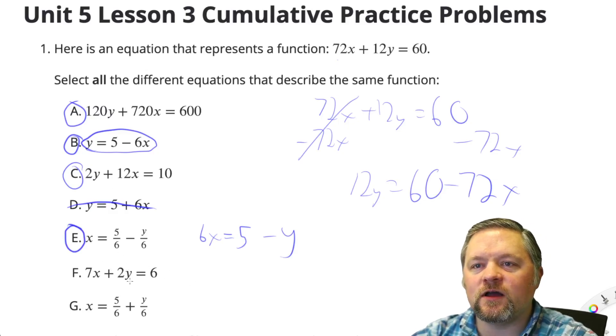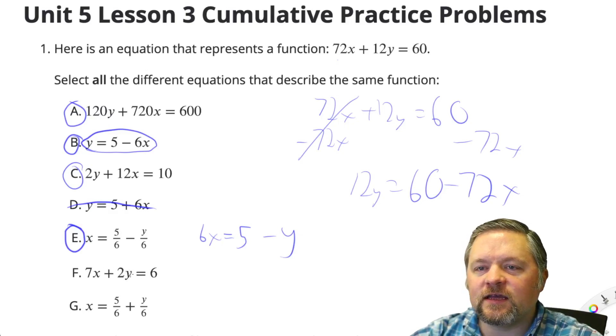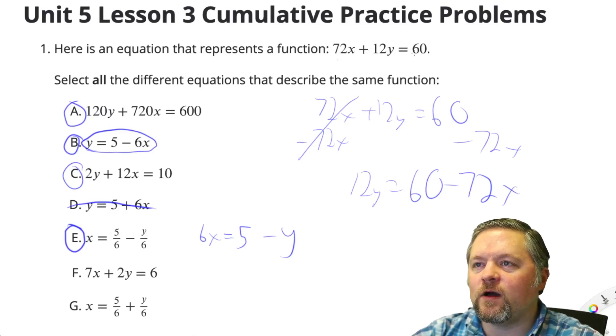7x plus 2y equals 6. Well, to get 2y, there were originally 12y's. 12y divided by 6 is 2. 60 divided by 6 is 10, not 6. So that's not going to work.